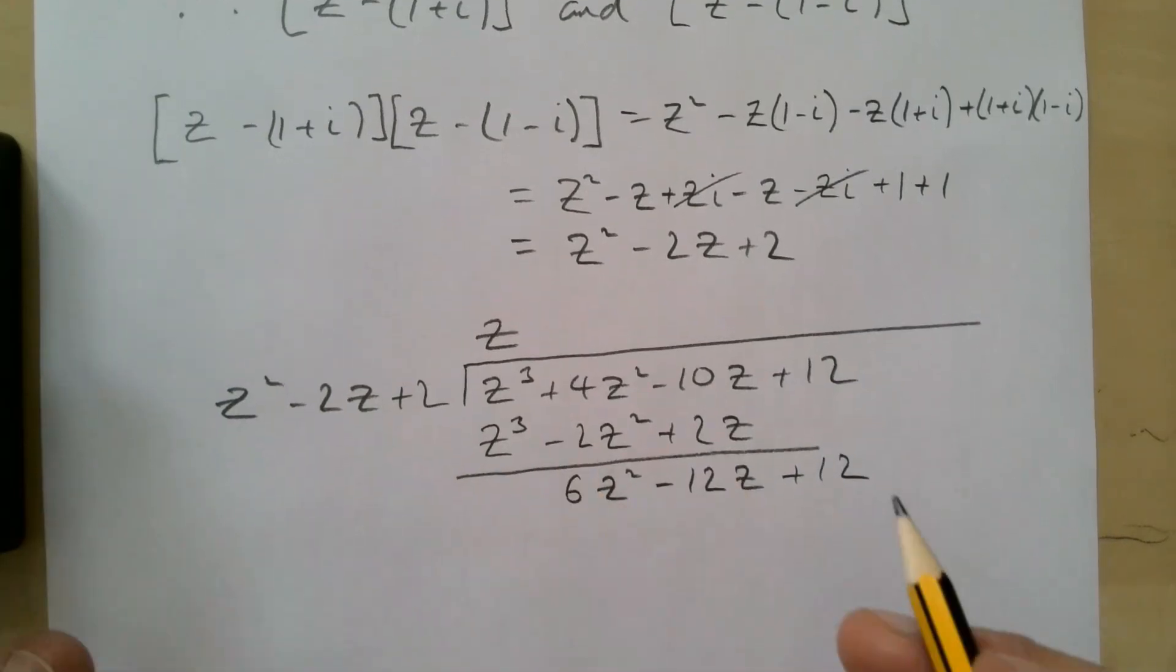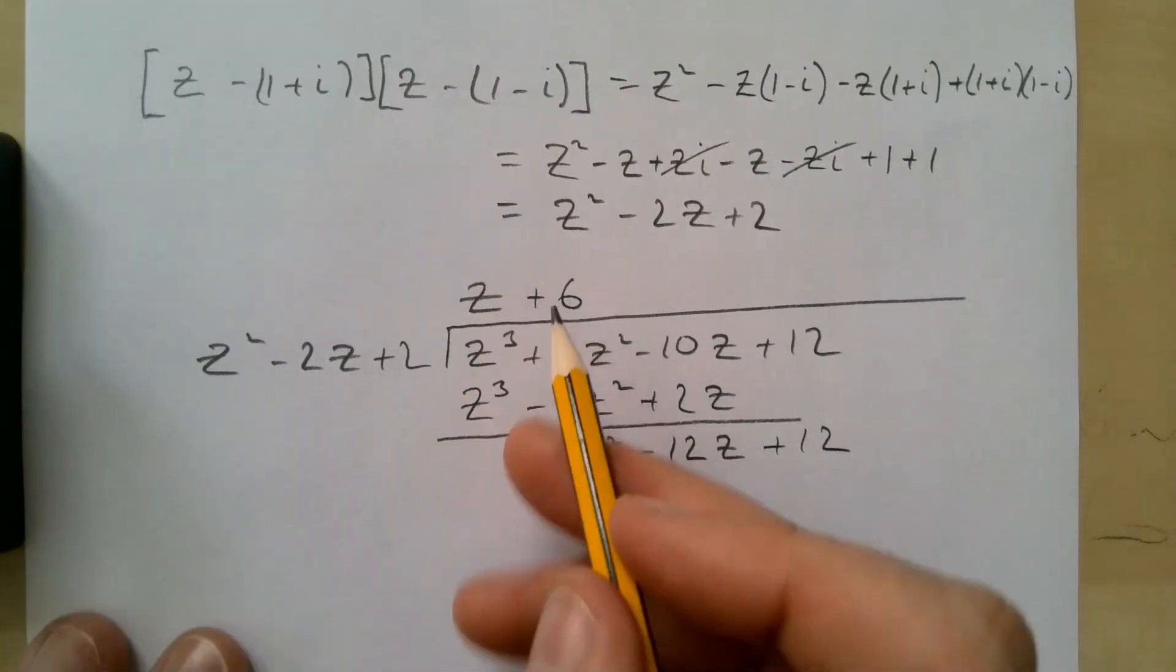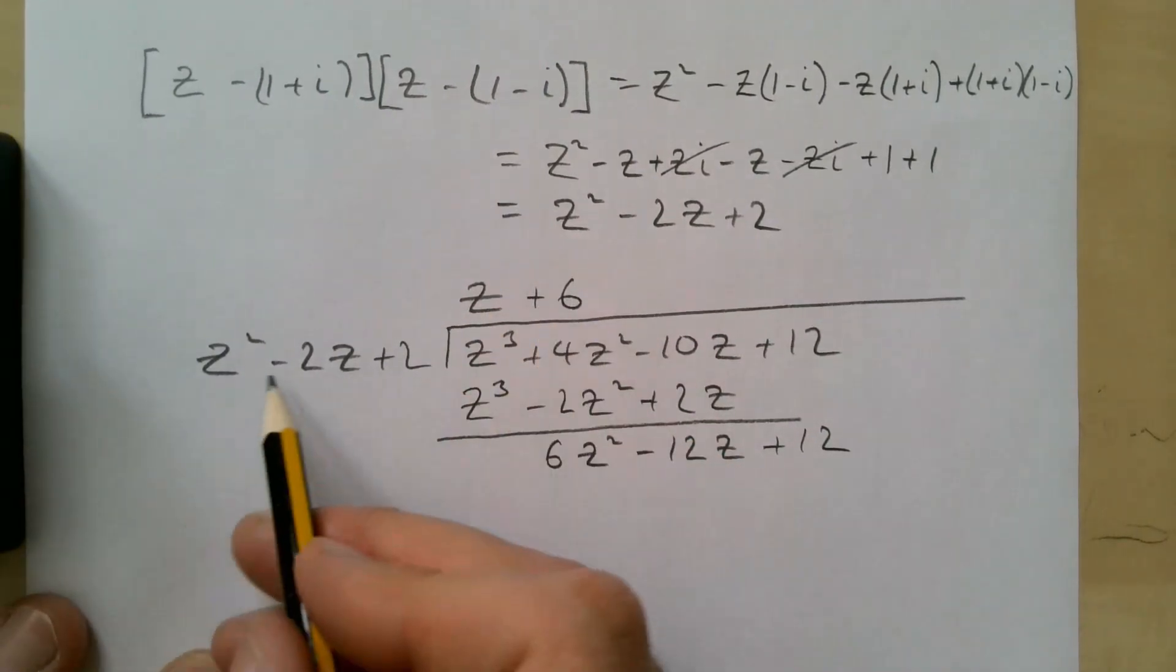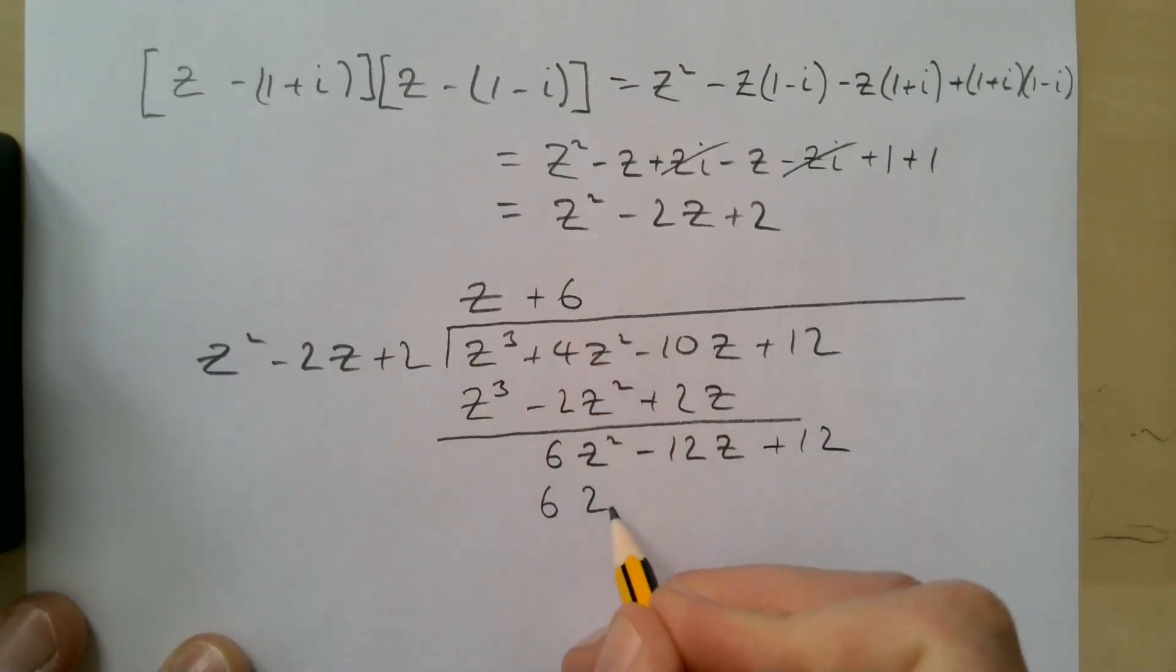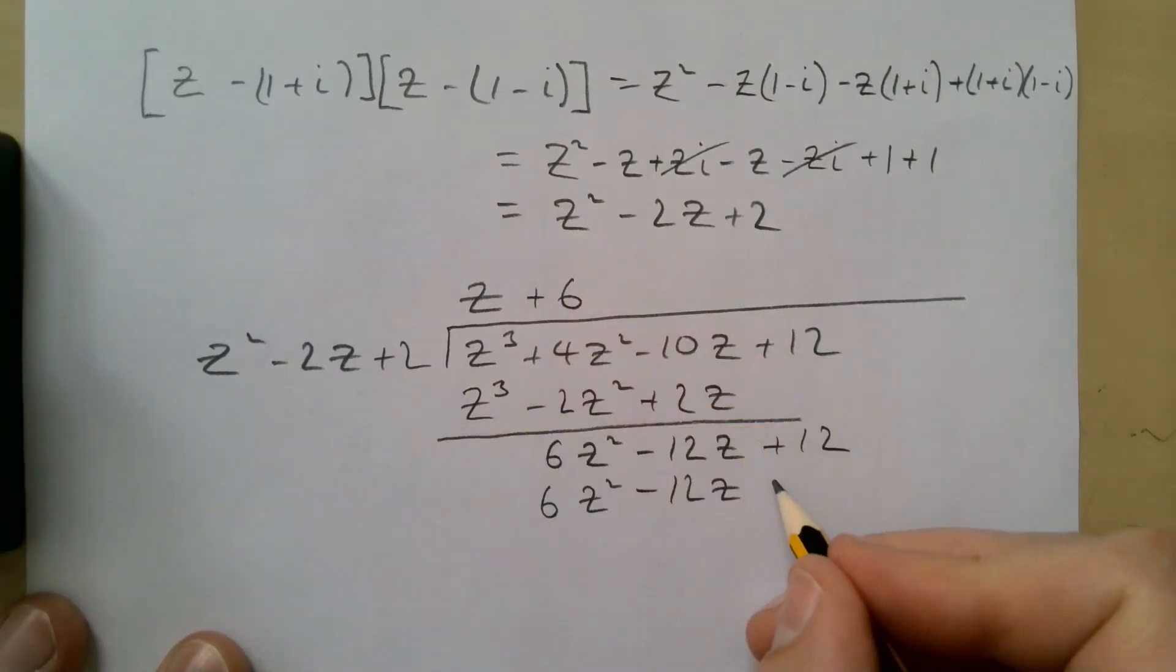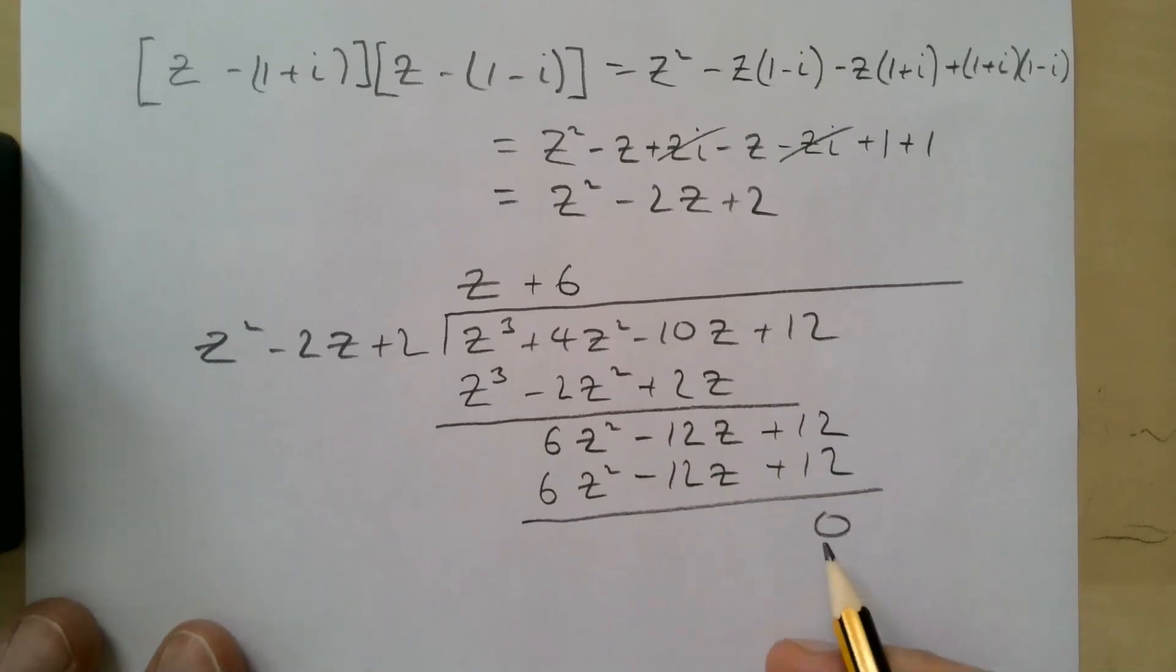So z² times what gives me 6z²? So that's +6. And hopefully that's us done and we need to check we do get zero here, although if we mess up somewhere in terms of this. Now about 6: 6z² - 12z + 12. So good news, everything cancels out and gives us zero.